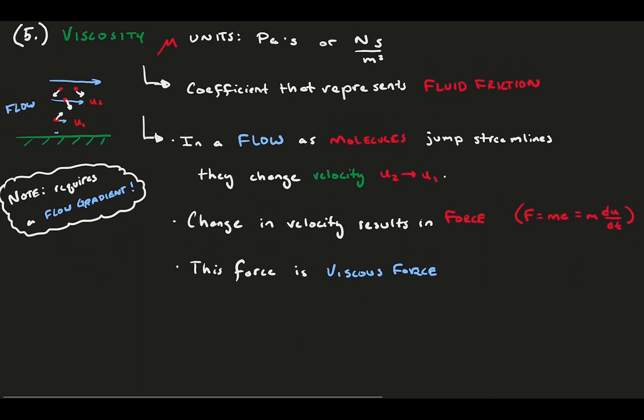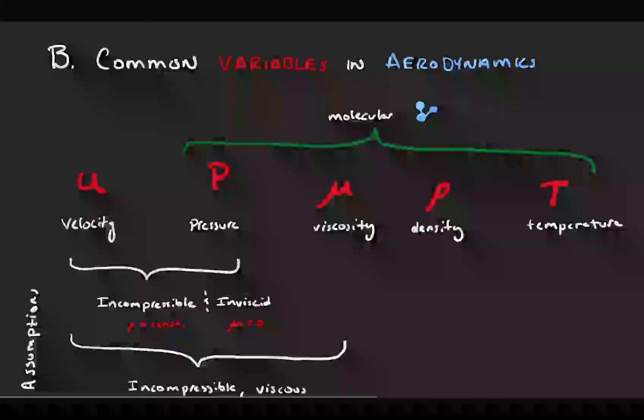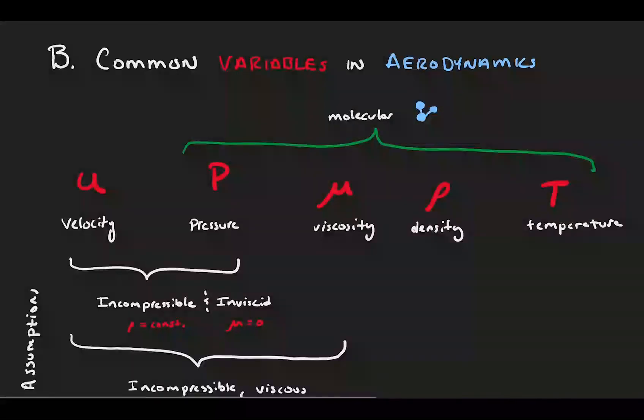And that's it for the flow variables. Let's quickly review. Here, we started with introducing the five main variables of air flow, and all these variables represent a force source.